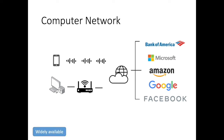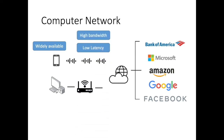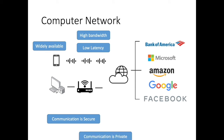For example, when we're on the road, the cell phone is often used for navigation and should be always connected. When we are talking to friends and family using video conference, we have the expectation that the link is high bandwidth and low latency. When we're using our mobile phone to deposit checks, we expect the communication is secure. And when we are using the mobile phone or computer to access iCloud photos, the communication is expected to be private.